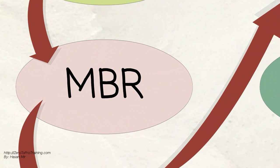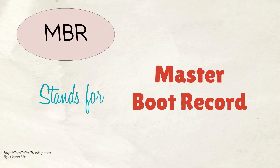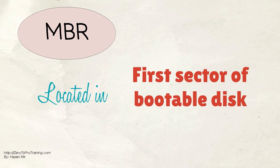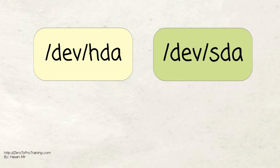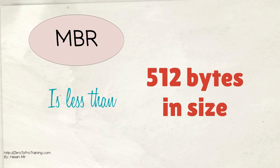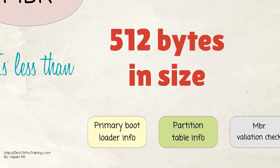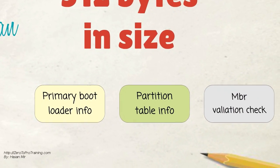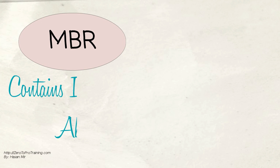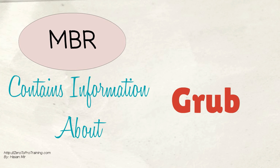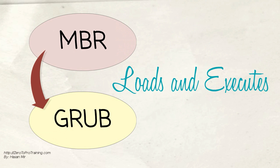Now let's talk about MBR. MBR stands for Master Boot Record. It is located in the first sector of the bootable disk, usually /dev/hda or /dev/sda. It is less than 512 bytes in size. It has three components: primary bootloader info in the first 446 bytes, partition table info in the next 64 bytes, and MBR validation check in the last 2 bytes. It contains information about GRUB. In short, MBR loads and executes the GRUB bootloader.